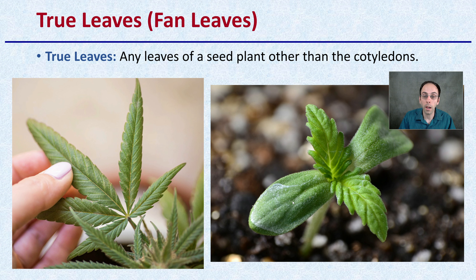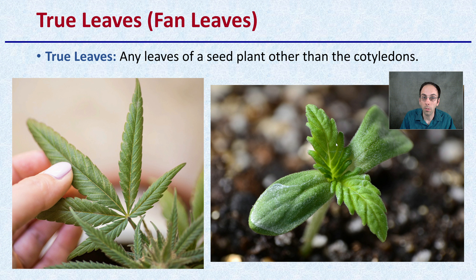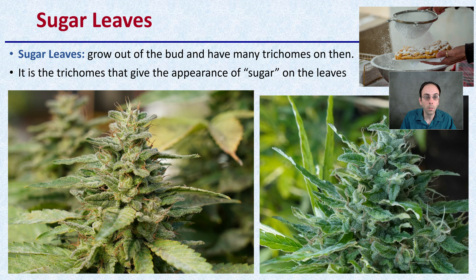After those cotyledons or seed leaves, we get into what we call true leaves. Here are our two seed leaves or cotyledons, and the next leaves after those would be our true leaves. True leaves are basically any leaves of a seed plant other than the cotyledons — so the third, fourth, and every leaf after that would be considered true leaves. When they get older, higher up in the plant, a lot of growers will refer to them as fan leaves — it's just a further classification of true leaves.